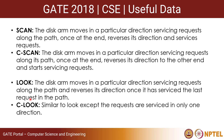In LOOK, the disk arm moves in a particular direction servicing requests and reverses direction once it has serviced the last request in that direction — it does not go all the way to the end. So with requests at 20 and 180 and head at 100, LOOK would service 180, reverse, then service 20. C-LOOK, similar to C-SCAN, would service 180, then jump back to service 20 without going to the boundary.